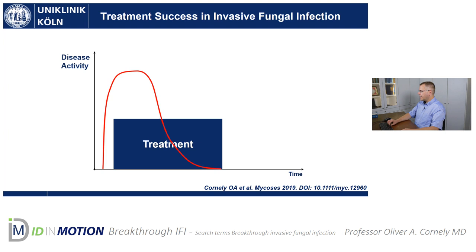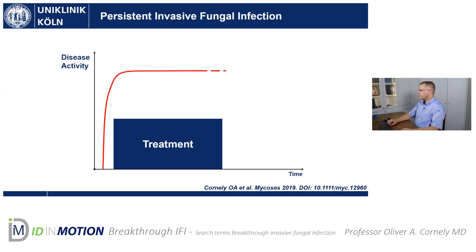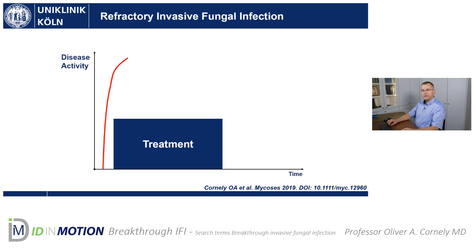But there are five ways to fail. First is persistent fungal infection: the fungal disease is pretty much uninfluenced by the treatment. Second is refractory invasive fungal infection: you start treatment, but there is no effect and the disease even gets broader — it might start to disseminate, or lung infiltrates are growing despite treatment. That is what we call refractory invasive fungal infection.